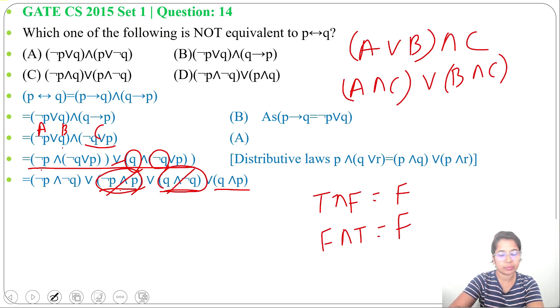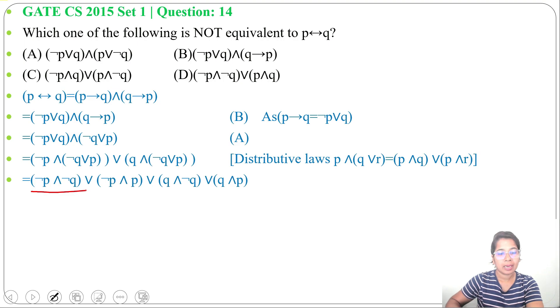So we can skip these two as these values are false. And in case of OR, P or false will be P. So we can write negation P and negation Q or Q and P. It's present in option D.